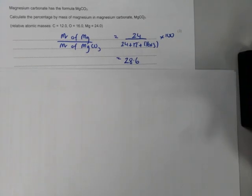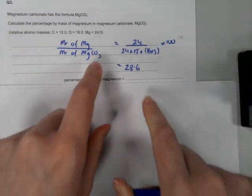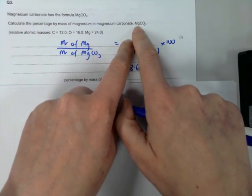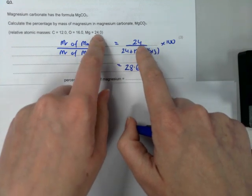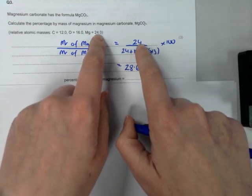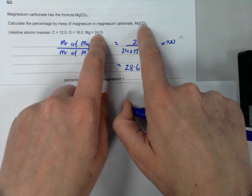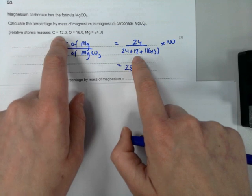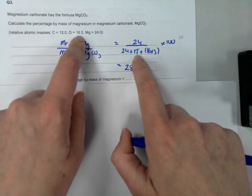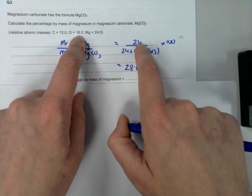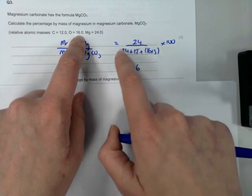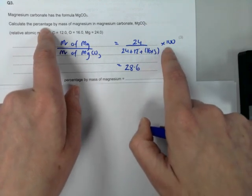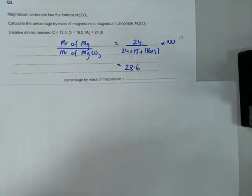In magnesium carbonate there is only one magnesium, and magnesium has a mass of 24, so I put 24 on the top. Then I work out the formula mass of magnesium carbonate: one magnesium (24), one carbon (12), and three oxygens (16 × 3). It's the formula mass of magnesium on the top divided by the formula mass of magnesium carbonate, times by 100. I get an answer of 28.6.